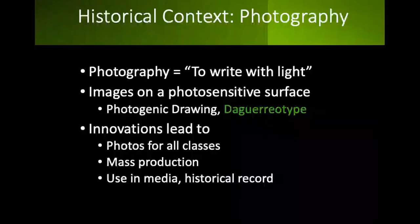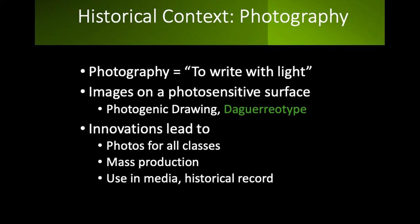Last but not least, there's a new art form on the scene as the development of photography makes photographs an accessible artistic medium. The word photography means 'to write with light,' and photographers are writing images on photosensitive surfaces. In England, William Henry Fox Talbot came up with photogenic drawing, fixing negative images on paper coated with light-sensitive chemicals. In France, Louis Daguerre exposed a positive image onto metal coated with light-sensitive chemicals and invented the daguerreotype. Technological developments were fast and furious — in just a few years they went from 40-minute exposure times to 60 seconds, making photography more accessible. The ease and availability of photographs led to photos for all classes, and some photographs were even mass-produced — 100,000 daguerreotypes were sold in Paris in 1849 alone.